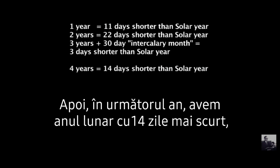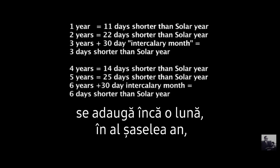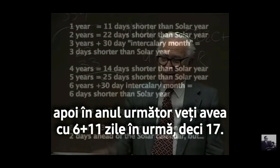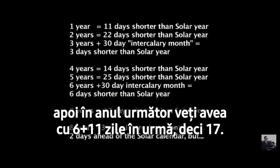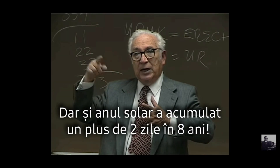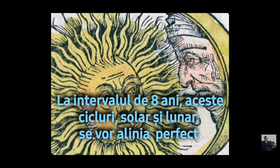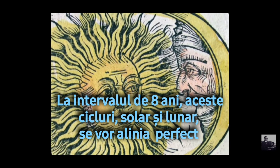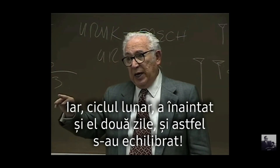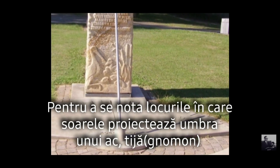Then you have another year — by this time you're 14 days short. Then another one, 25 days short. You add a month in the sixth year, so you're only six days short. Then the next year, you have 6 plus 11 — that's 17. Then 11 and 17 is 28. You add a month and you're two days ahead. But the solar year has added two days in eight years — one day for every fourth year of the leap year. In eight-year cycles, they come out exactly even, because the solar cycle gains a day every fourth year and the lunar cycle comes out two days ahead, which equals 28 plus 2.